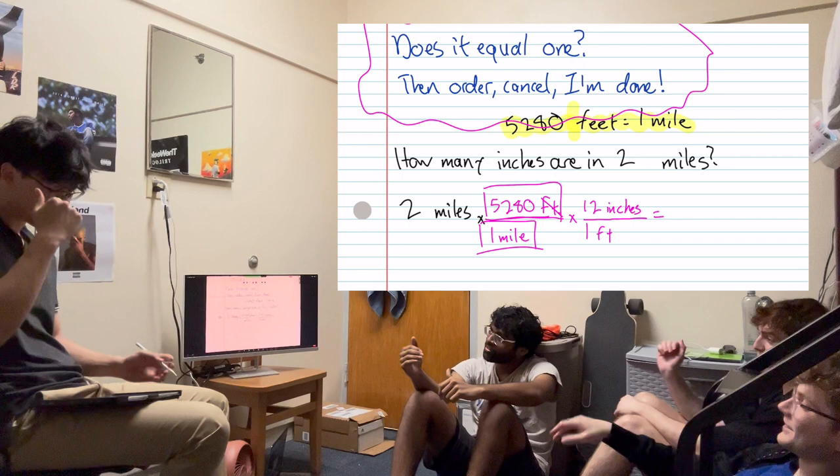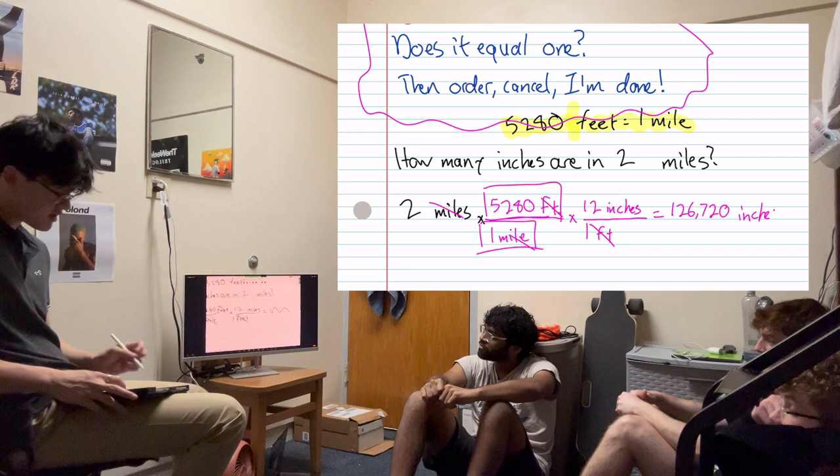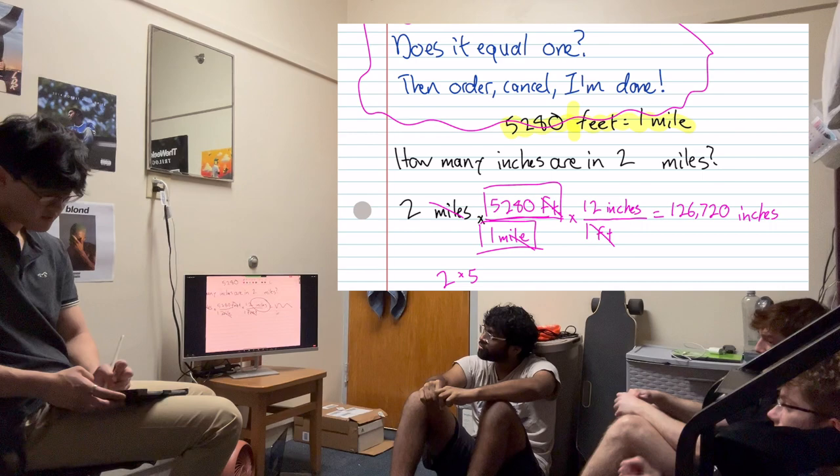It's ordered well, so it cancels well. And we've got to multiply these three numbers together, which, honestly, I don't even remember what they are. So, we get our answer. And, of course, the units are going to be in inches. So, it's this amount of inches. And that's how you compare it between units.